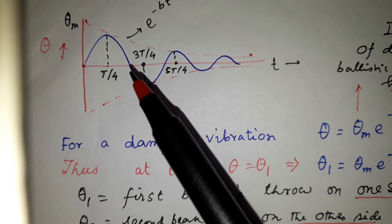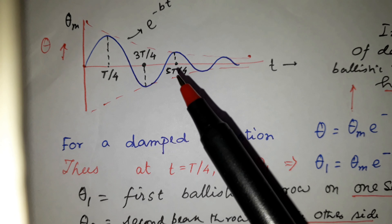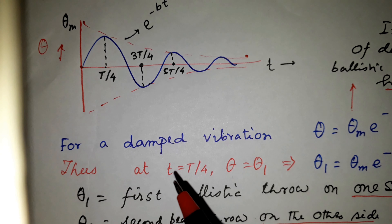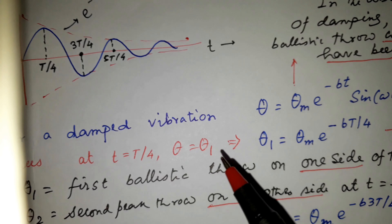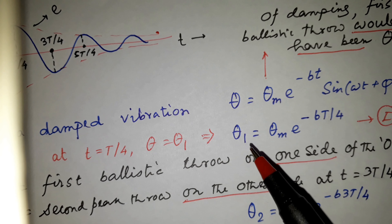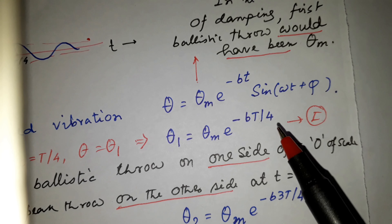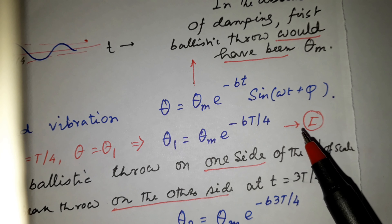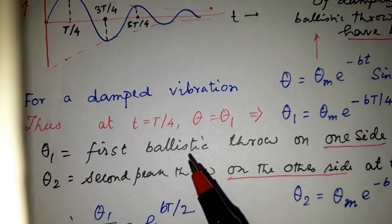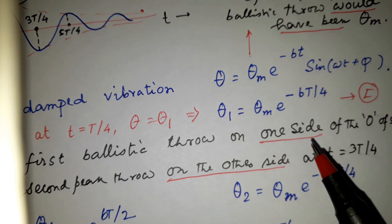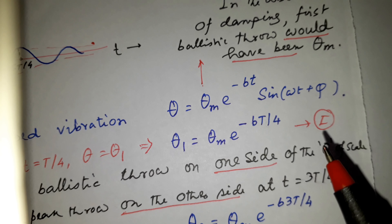The time markers are T/4, T/2, 3T/4, and 5T/4. At t equal to T/4, we get theta_1 equal to theta_m times e to the power minus bT/4, which is equation 1. Theta_1 is the first ballistic throw on one side of the zero of the scale.